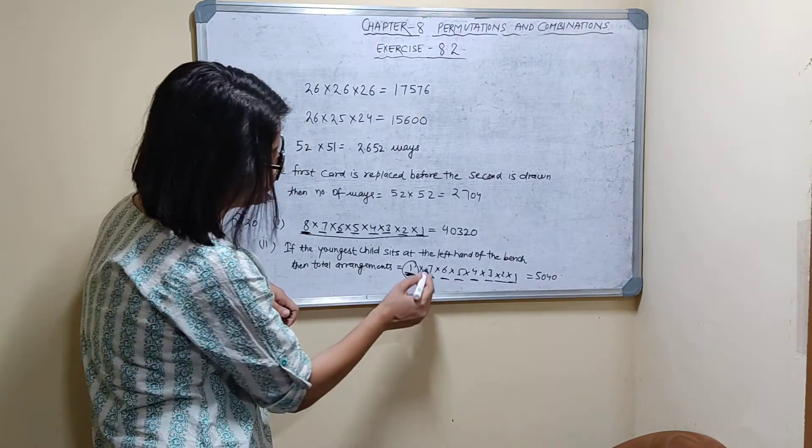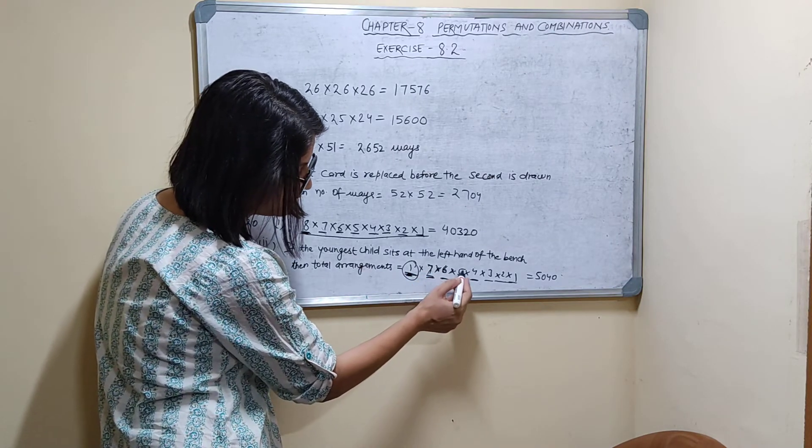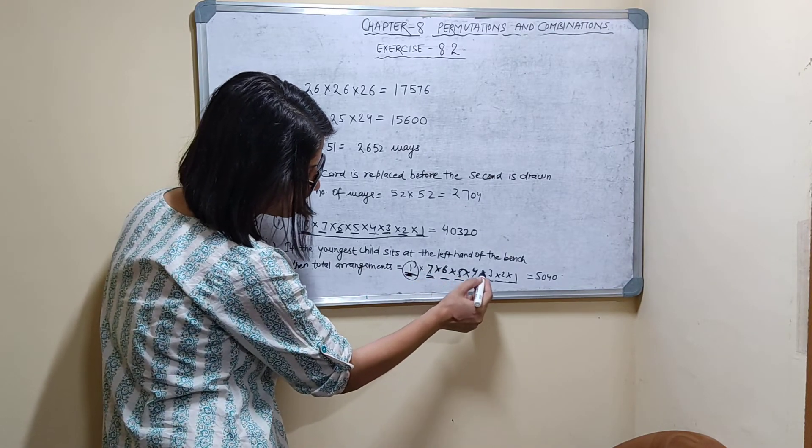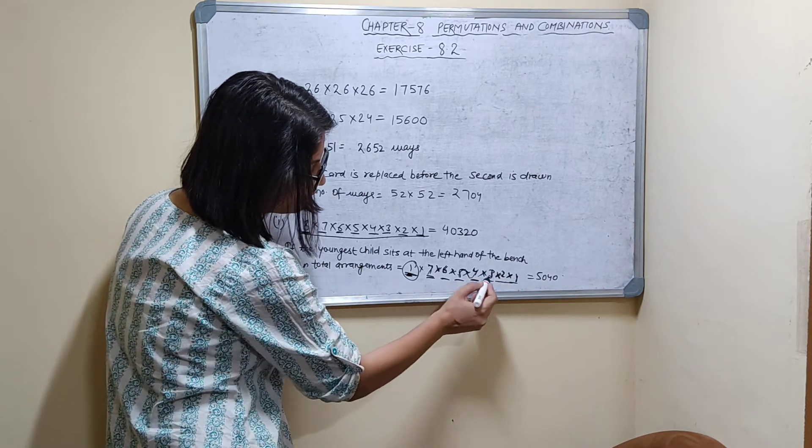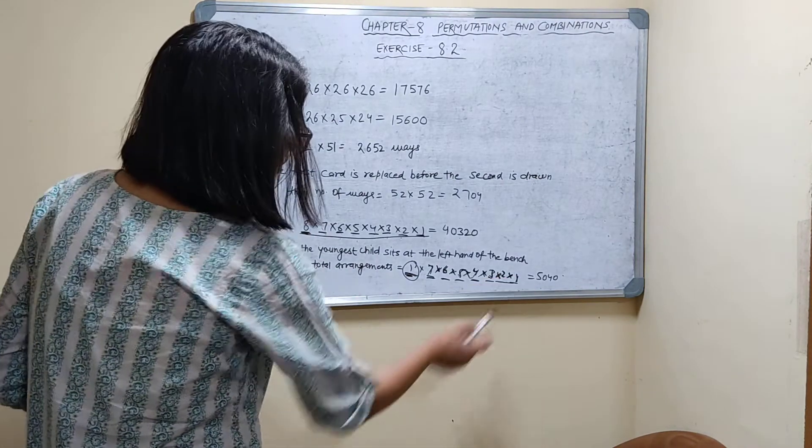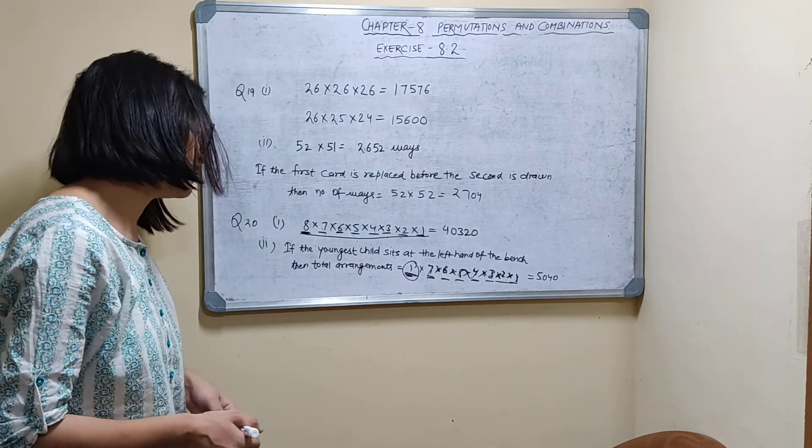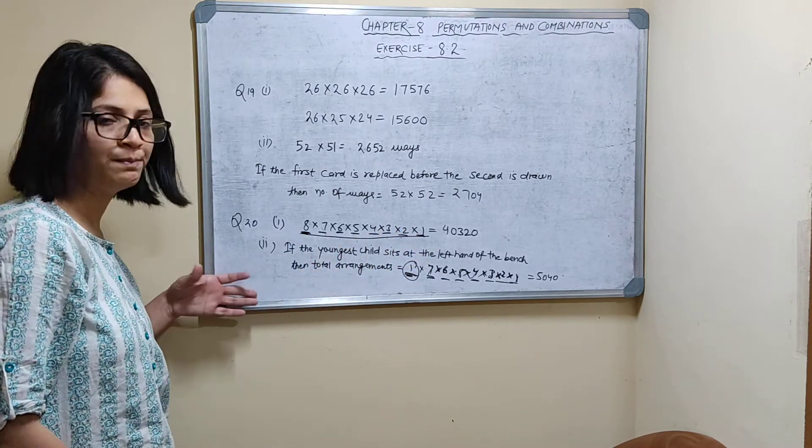So for this seat, seven choices can be filled. Any seven child can come here. Six child can come here. Five child can come here. Four child can come here. Three here. Two here. One. So four, five, six, seven. And already it is fixed for youngest child. So 5,040 arrangements are possible when the youngest child sits at the left hand of the bench.